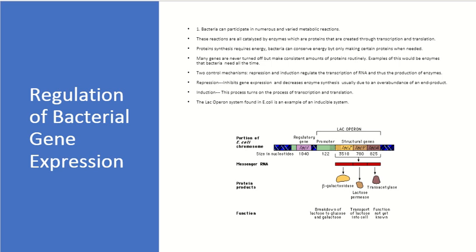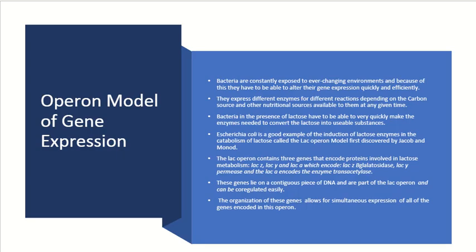The lac operon system found in E. coli is an example of an inducible system. This material is more appropriate for a cellular and molecular biology course. Bacteria are constantly exposed to ever-changing environments and must alter their gene expression quickly and efficiently, expressing different enzymes depending on the carbon source and nutritional sources available. Bacteria in the presence of lactose must quickly make enzymes to convert lactose into something usable. E. coli is a great example of the induction of lactose enzymes in the catabolism of lactose — called the lac operon model — first discovered by Jacob and Monod.